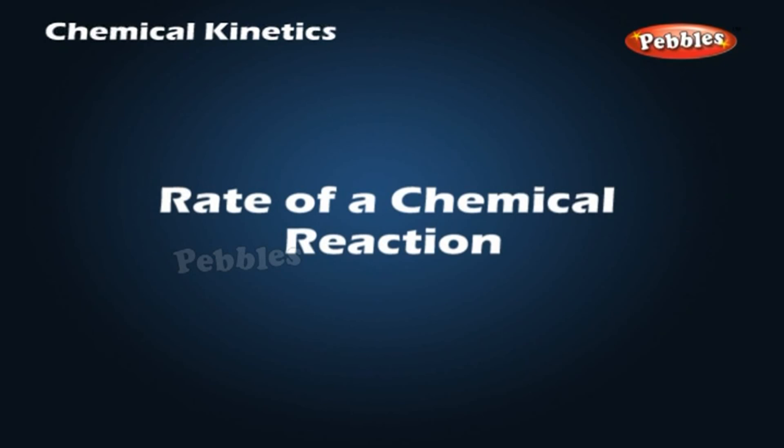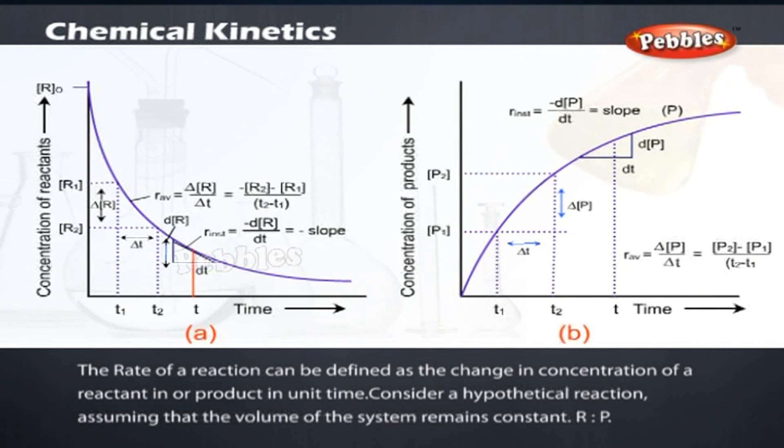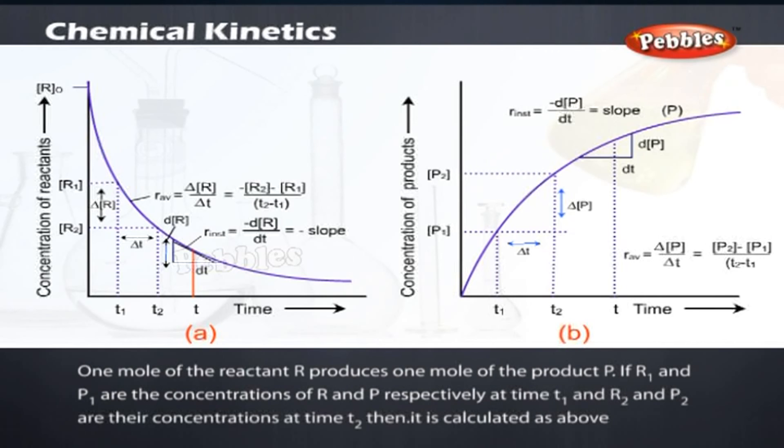Rate of a chemical reaction. The rate of a reaction can be defined as the change in concentration of a reactant or product in unit time. Consider a hypothetical reaction. Assuming that the volume of the system remains constant, R goes to P. One mole of the reactant R produces one mole of the product P.